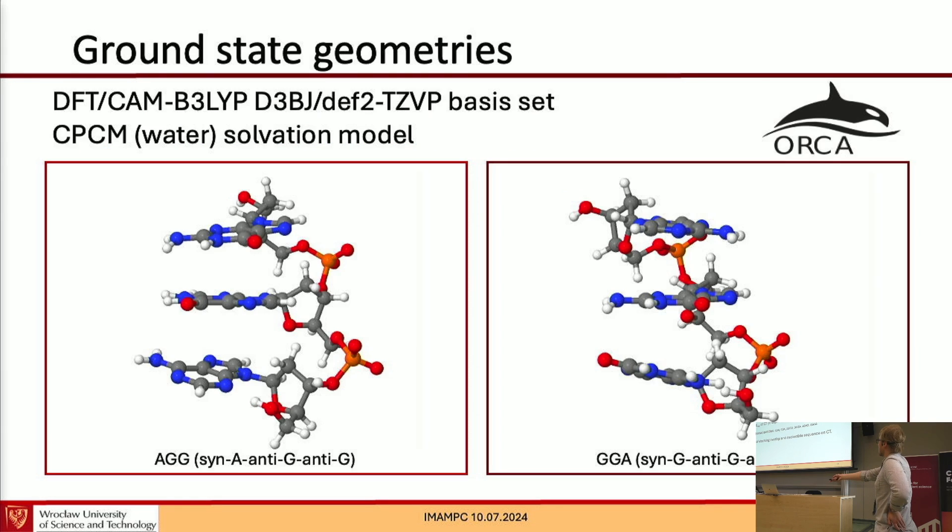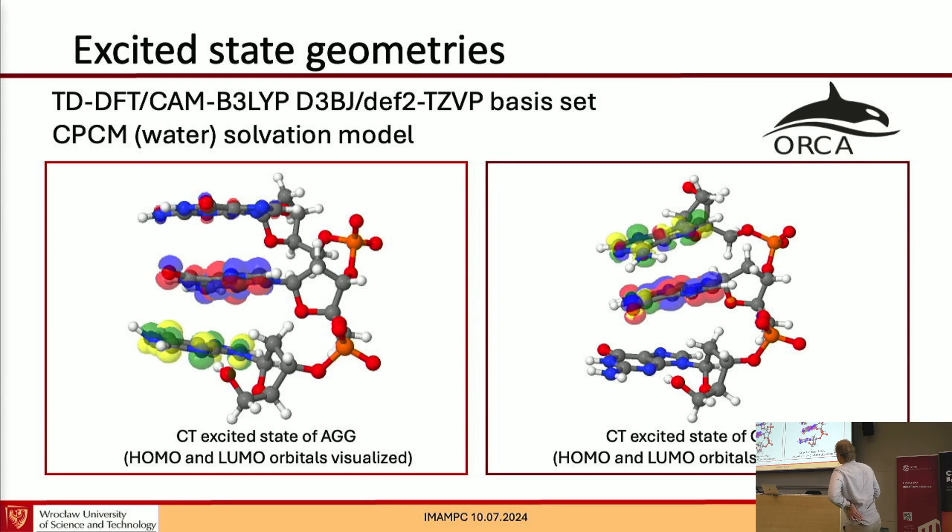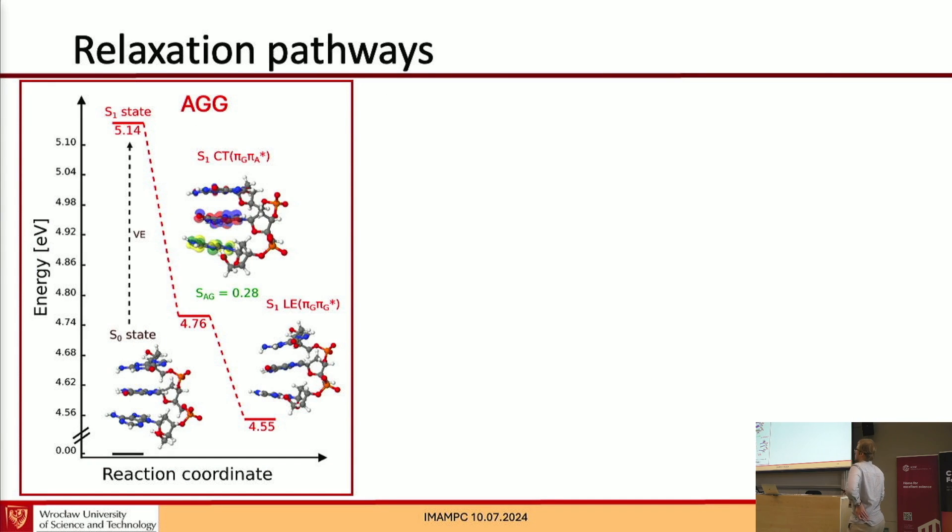And first I optimized those trimers and tetranucleotides in their ground state with methodology presented here. And just to show you how difficult it would be to extract some information about stacking from the structure, I think it's better to use some code to do this. And then, of course, I optimized the excited states with different characters. Here are the charge transfer states for three nucleotides, AGG and GGA. And I use them to construct some relaxation pathways for the system.